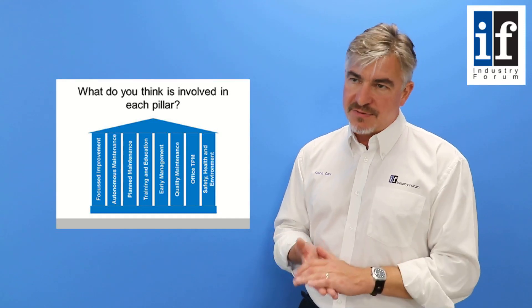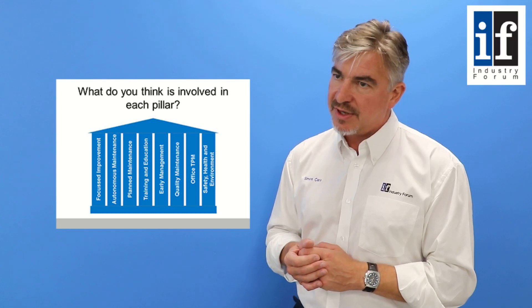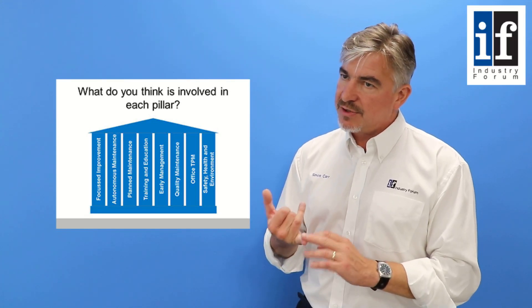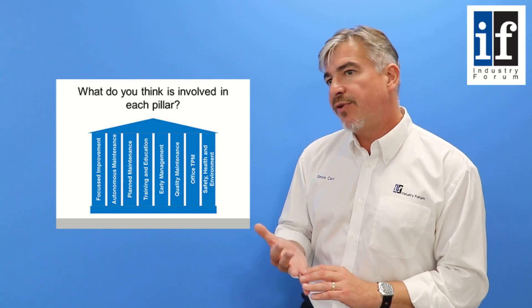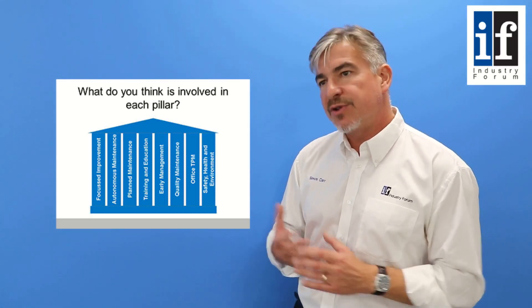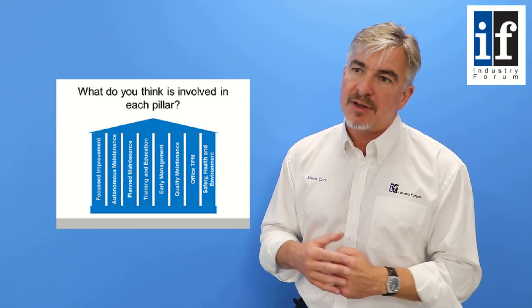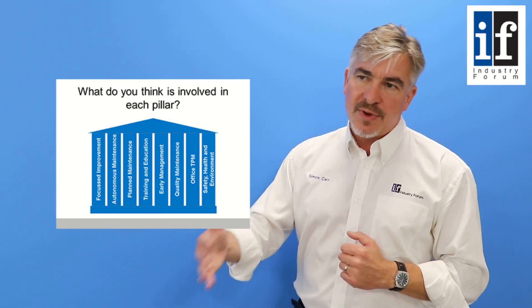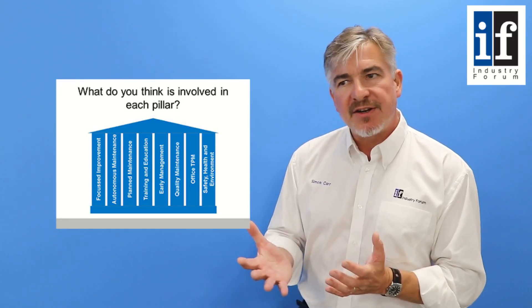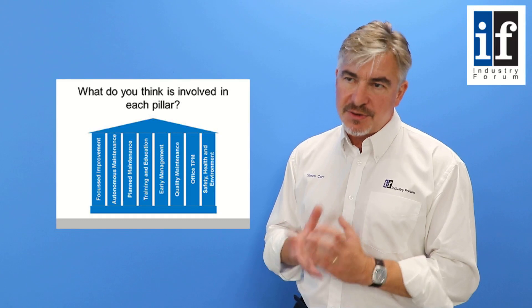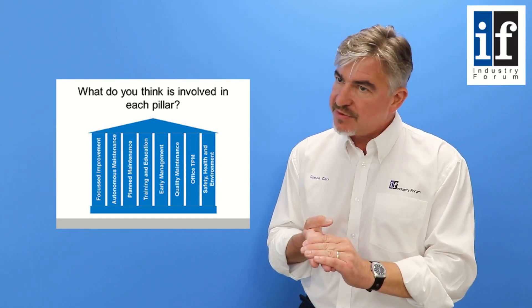The challenge is often sustainability, so the next few pillars help with that. There's a pillar described as autonomous maintenance, which is where operators get more involved in the care of the equipment, restoring it and maintaining it. Planned maintenance will play their part over the weekly, monthly, annual cycles. Training and development—if we change something, it's important we give people the new skills. So that describes the first four pillars.